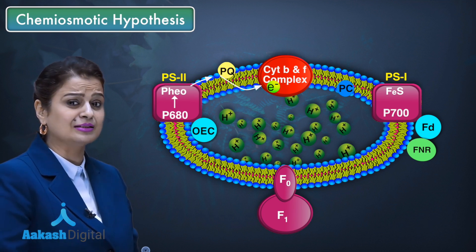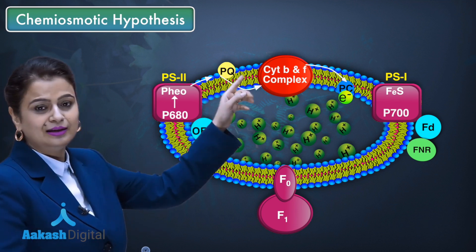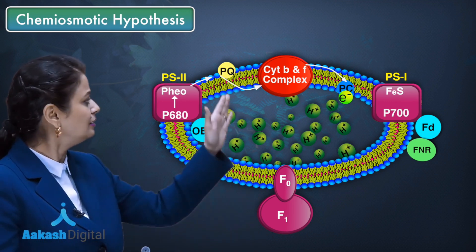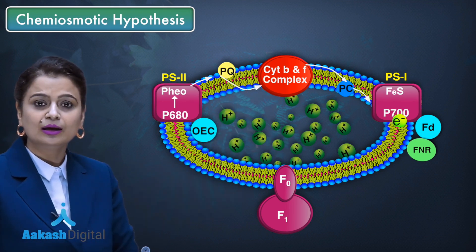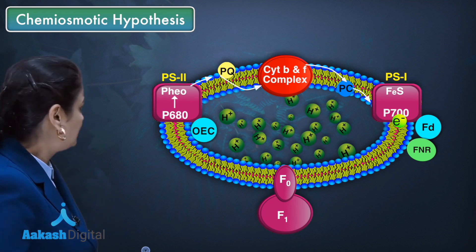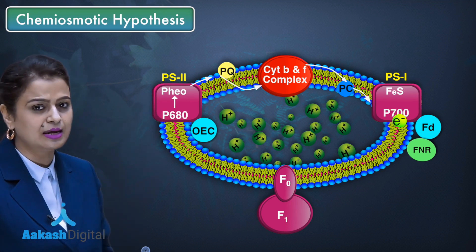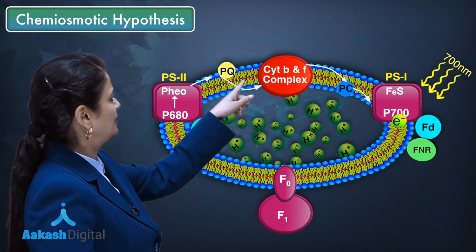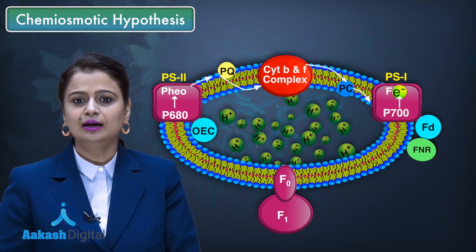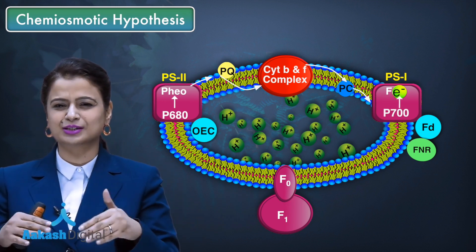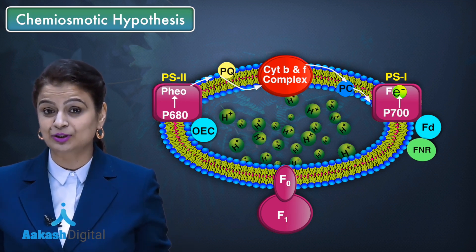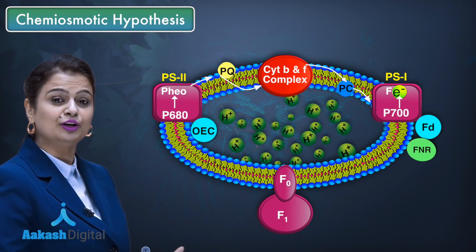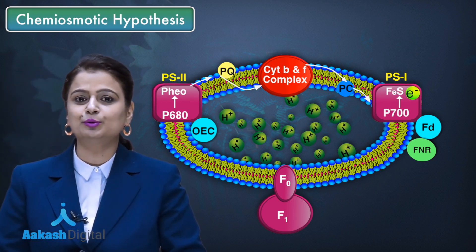From the cytochrome bf complex, electrons are transferred to plastocyanin, which is a mobile carrier. From plastocyanin, the electron is transported to P700. At the same time that P680 absorbs a photon, P700 also absorbs a photon, so electrons are transported from P700 to FeS. FeS is part of photosystem 1 and acts as the primary electron acceptor of photosystem 1. For photosystem 2, the primary electron acceptor is pheophytin.